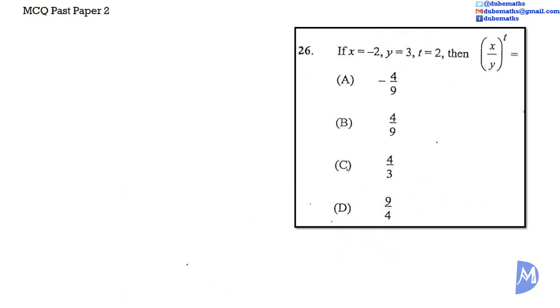Question 26. If x is equal to negative 2, y is equal to 3, t is equal to 2, then x over y all to the power t is equal to: is it A, negative 4 over 9; is it B, 4 over 9; is it C, 4 over 3; or is it D, 9 over 4?